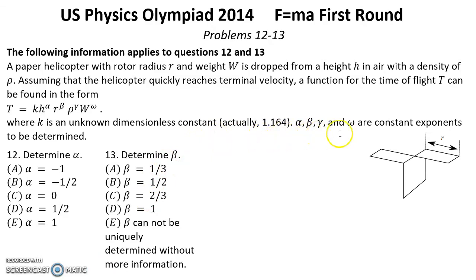Alpha, beta, gamma, and omega are constant exponents to be determined. Question 12: Determine alpha. Question 13: Determine beta.